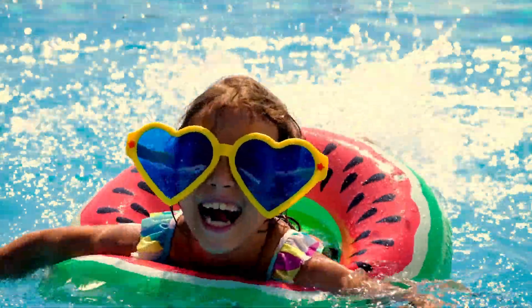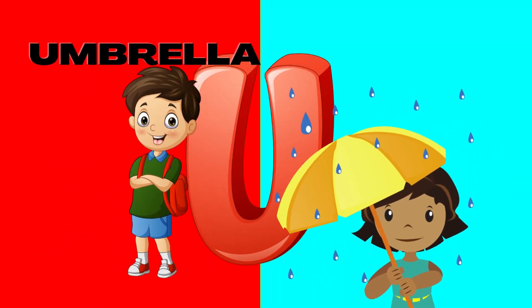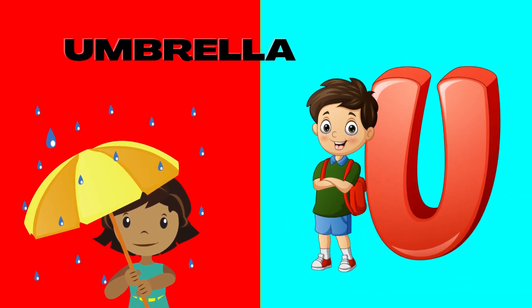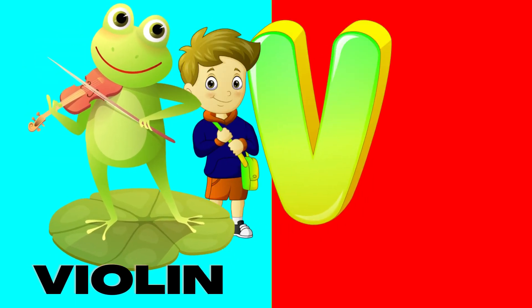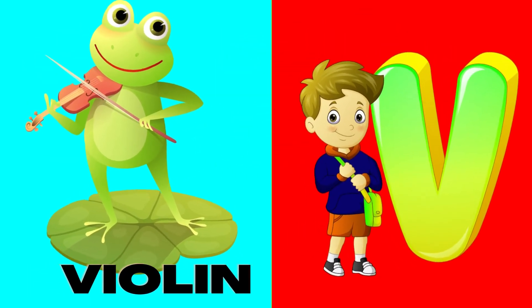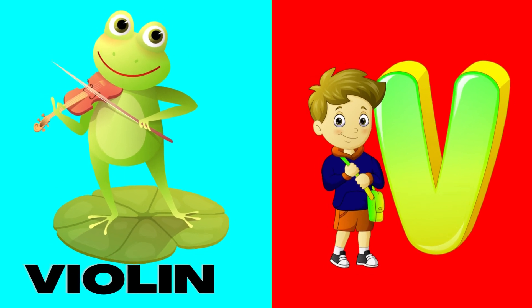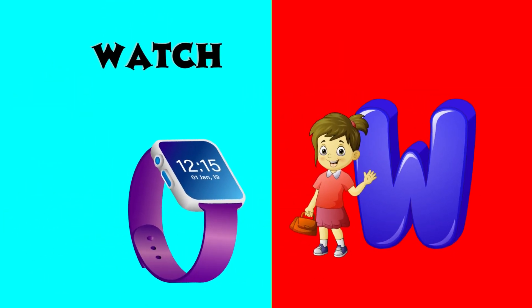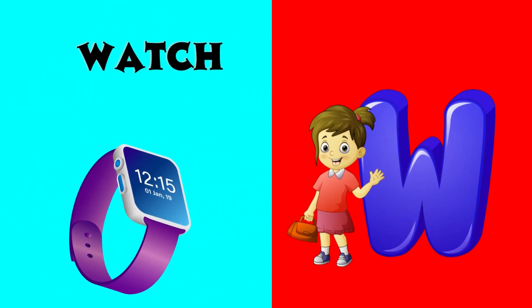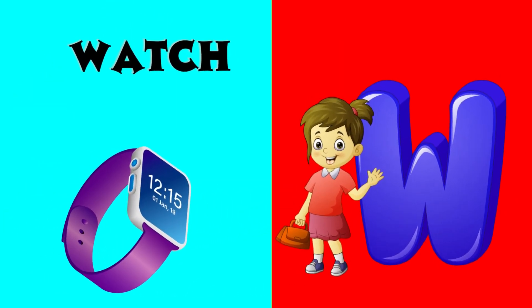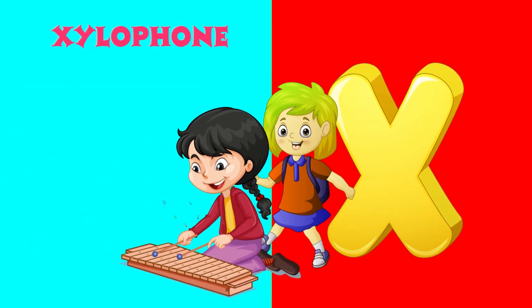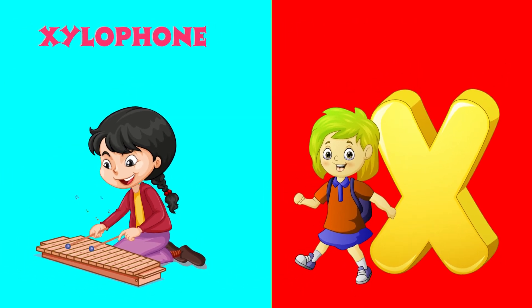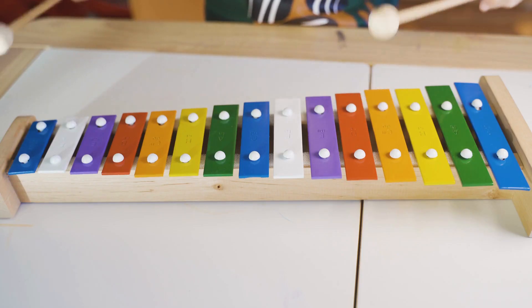U is for umbrella, u-u-umbrella. V is for violin, v-v-violin. W is for watch, w-w-watch. X is for xylophone, x-x-xylophone.